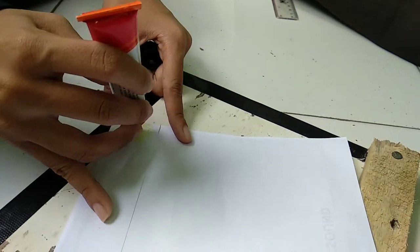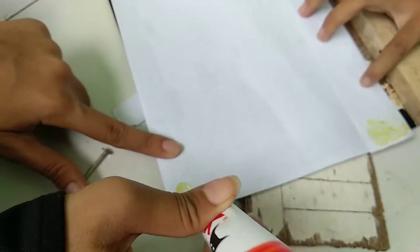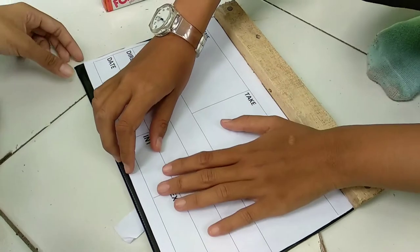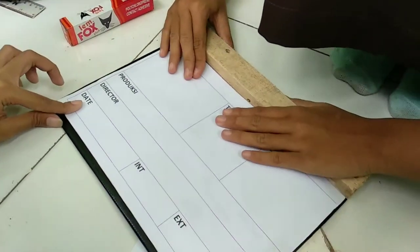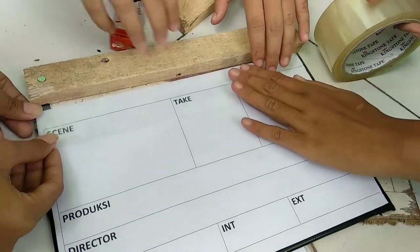Apply glue to the paper, then paste it on the plywood. Let it stand for a moment until the glue dries.